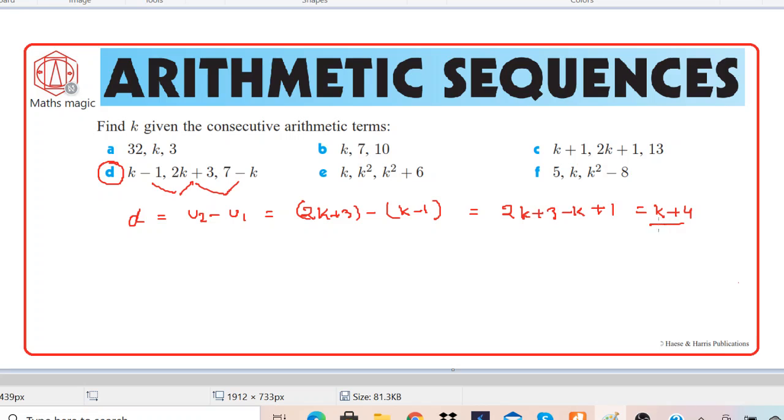So we got u2 minus u1 is k plus 4. Now we can find u3 minus u2.